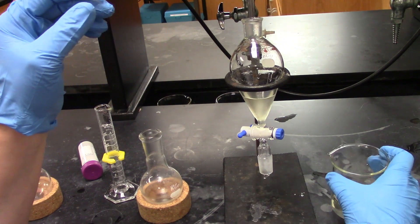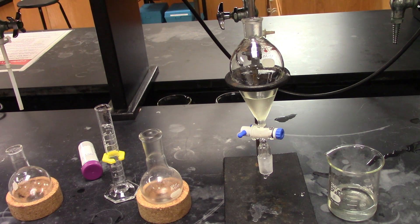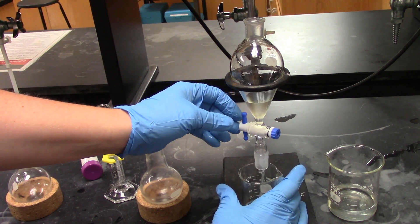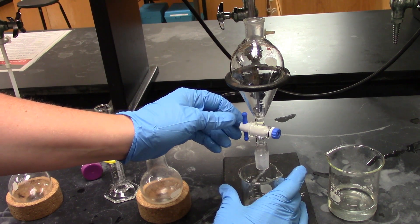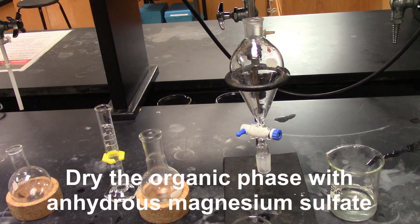So this is the desired aqueous phase. Now for the desired organic phase, we need to dry it out with a little anhydrous magnesium sulfate.